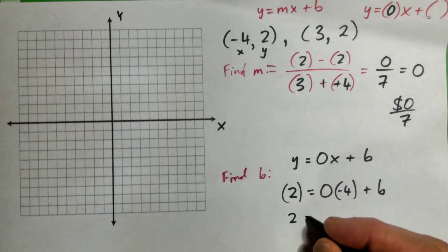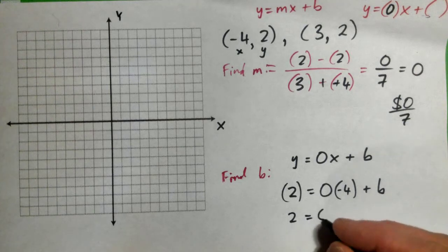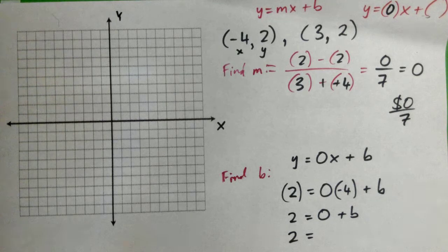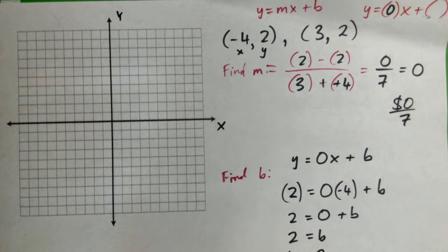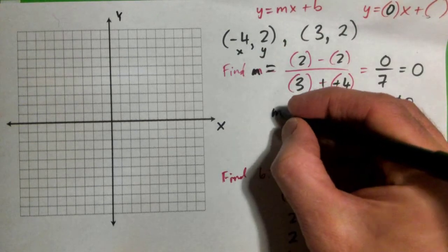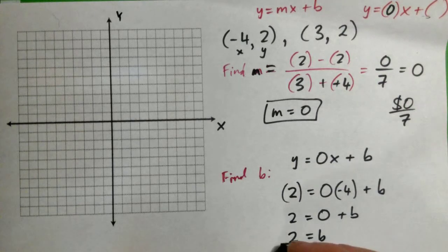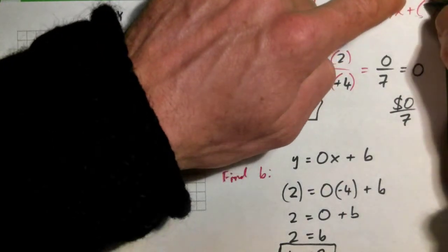So work that out. Well, you got 2 equals, what's 0 times -4? 0 + b. So 2 = b. So b = 2. b is 2. That's it. So we found that m at the top here is 0, and now we find that b is 2. And so for answer, y = mx + b. y = 0x + 2.